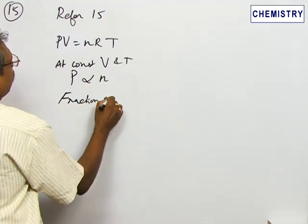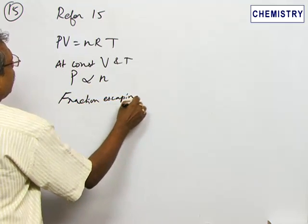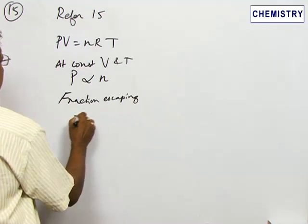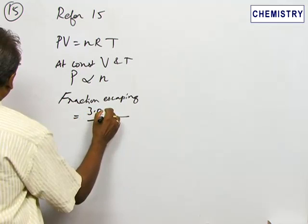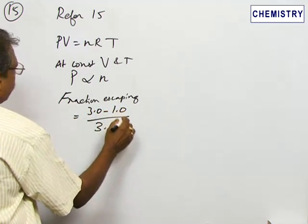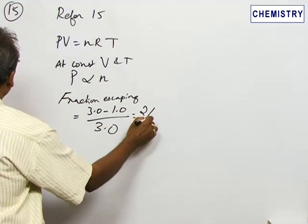Fraction escaping is calculated by the formula: out of 3, 3.0, so 3.0 minus 1.0, which gives us 2 by 3.